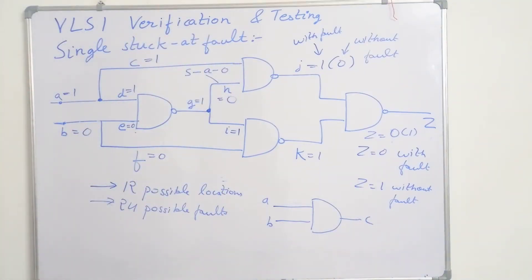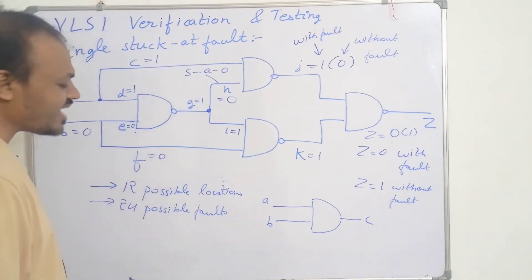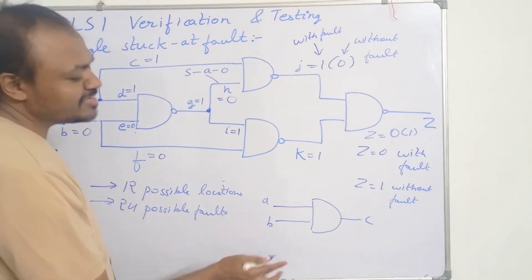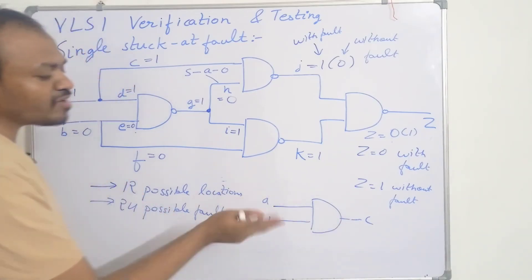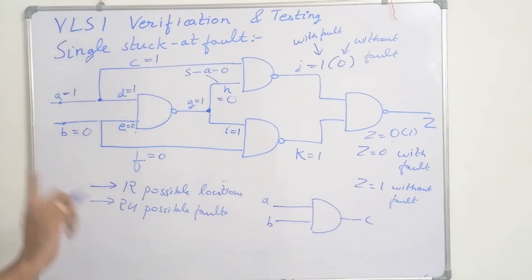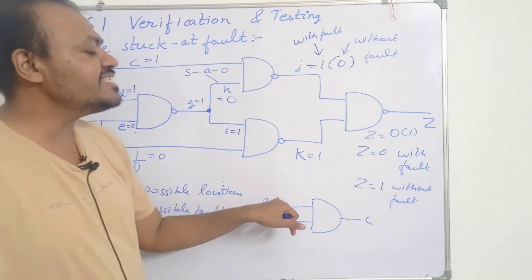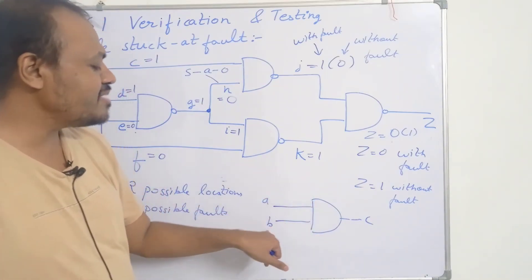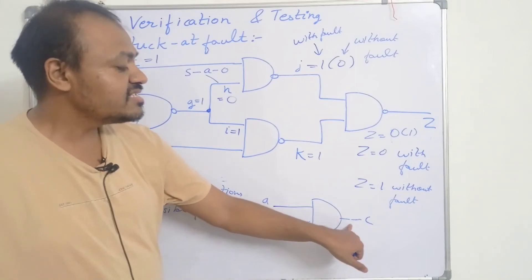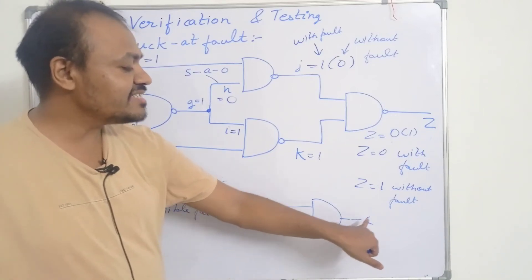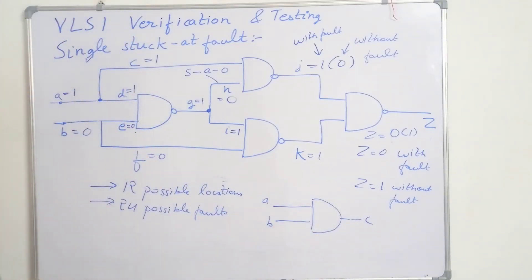Now let's take another example — an AND gate where A and B are the inputs and C is the output. There are 3 possible fault locations — 1, 2, and 3 — giving 6 possible faults. A can be stuck at 0 or stuck at 1, B can be stuck at 0 or stuck at 1, and C can be stuck at 0 or stuck at 1.